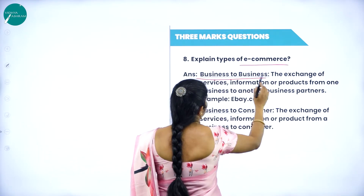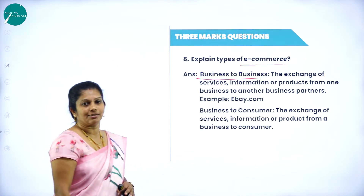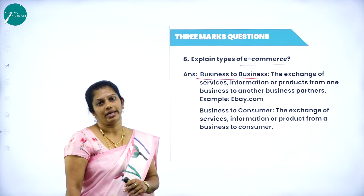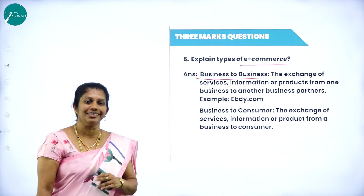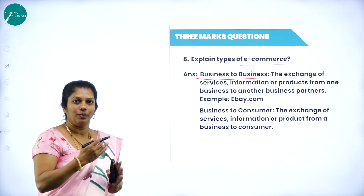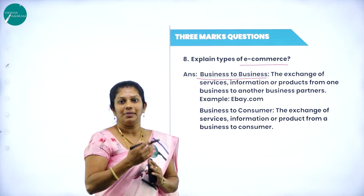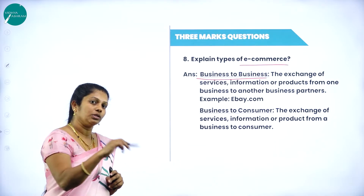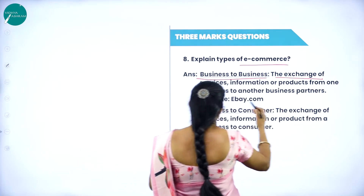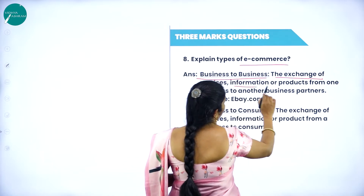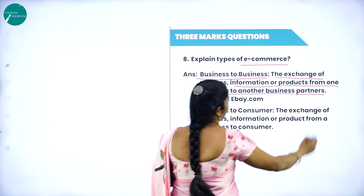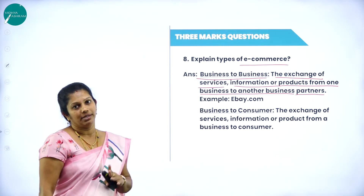First, business to business. The name itself suggests business to business — the transaction takes place between two organizations. One organization wants some raw material and another organization provides that material. Both are organizations. That is the exchange of services, information, or products from one business to another business partner.